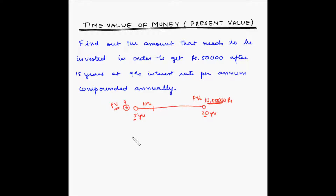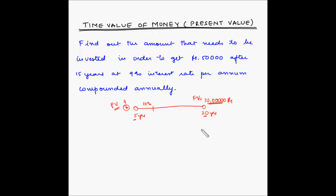In general, the present value of a cash flow due in N years in the future is the amount which, if it were on hand today, would grow to equal the future amount.